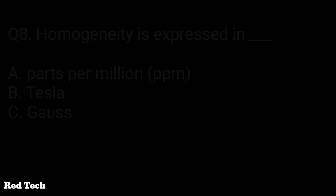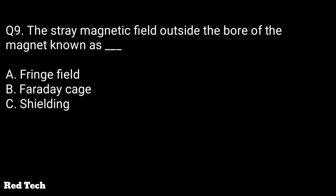Question number nine: the stray magnetic field outside the bore of the magnet is known as — the options are fringe field, Faraday cage, or shielding. The right answer is fringe field. This is basically the stray field that crosses conventional walls, floor, or ceiling, and is potentially harmful to patients with pacemakers or monitoring devices.